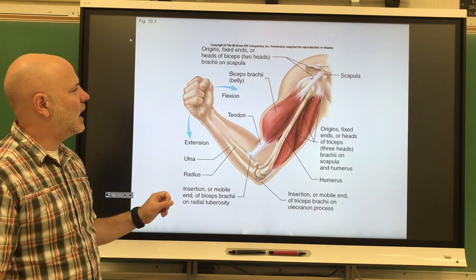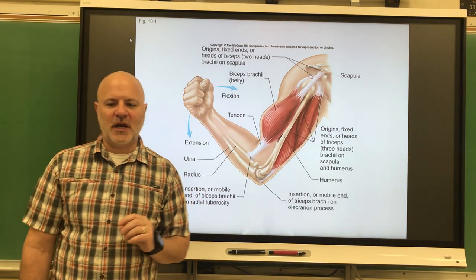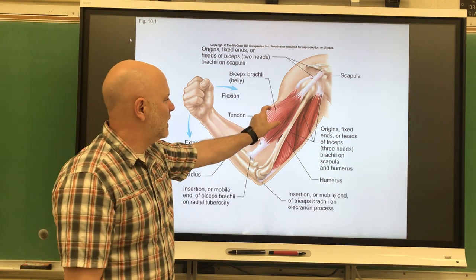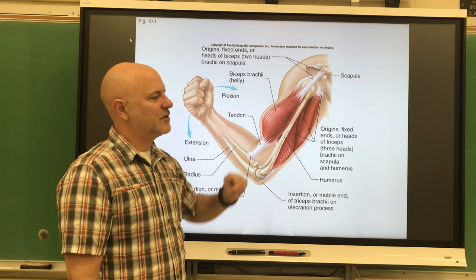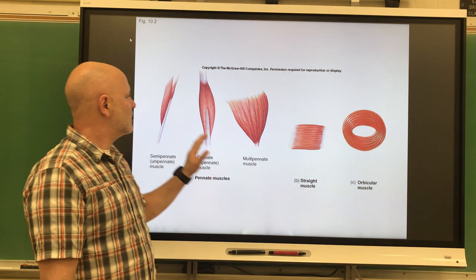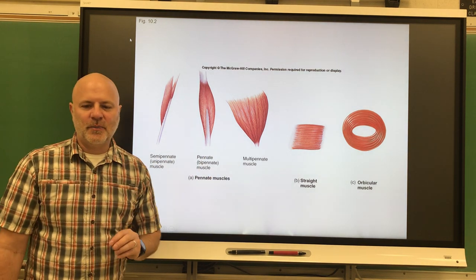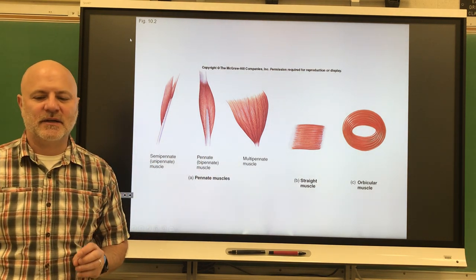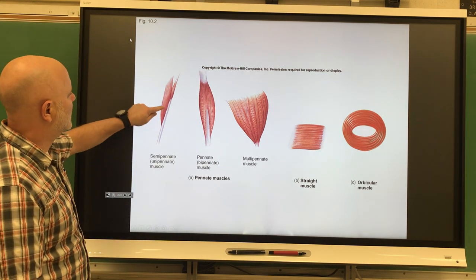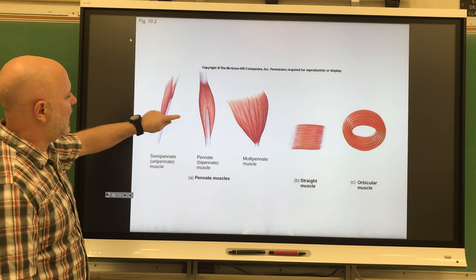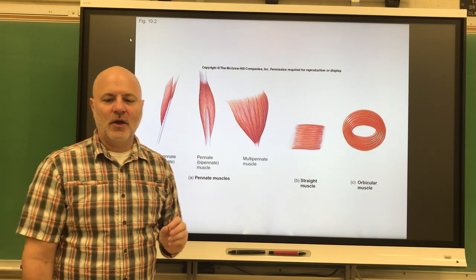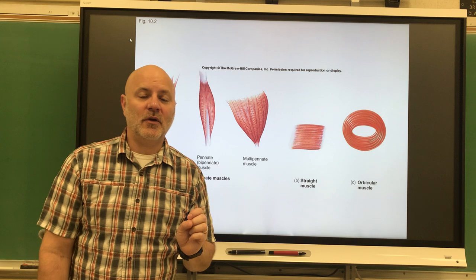Next is fusiform. The biceps brachii shows fusiform. This is muscles with an extended belly. They're thicker in the middle, thinner on the edges there. Lastly is pennate. Pennate is where the muscles and the fascicles are short and attach obliquely. We see that here. This is a unipennate, there's a bipennate, here's a multipennate.